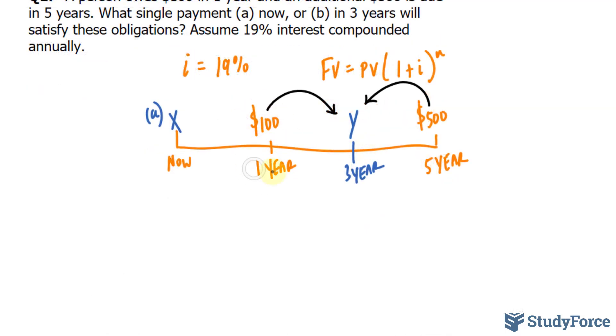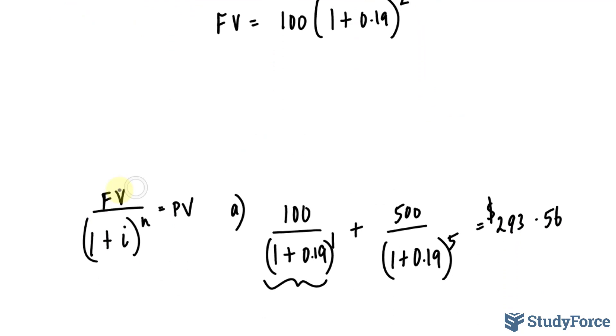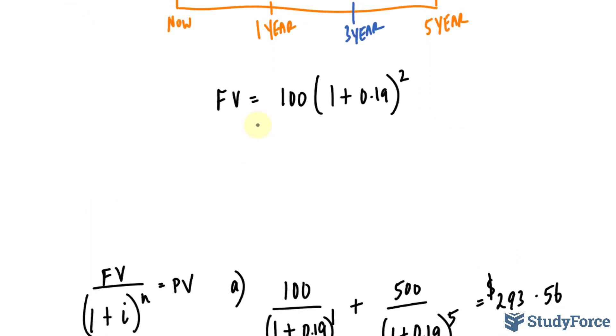So I need to find out the future value. Future value equals the present value, which is 100, times 1 plus 0.19, and the period n is 2. Whatever that is equal to, we will add it to whatever this is equal to two years prior. For this, we will use this formula because we are discounting, we are going back. So I will write down a future value of 500 equals 1 plus 0.19 raised to the power of 2.